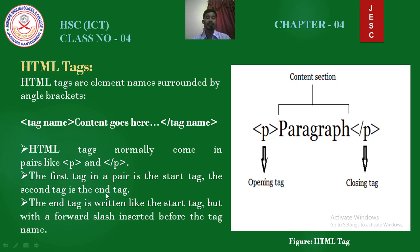The first tag in a pair is the start tag or opening tag. The second tag is the end tag or closing tag. The end tag is written like the start tag but with a forward slash inserted before the tag name. Here is an example of a paragraph tag — this is the opening tag and this is the closing tag. To write a closing tag, you have to use a forward slash before the tag name.